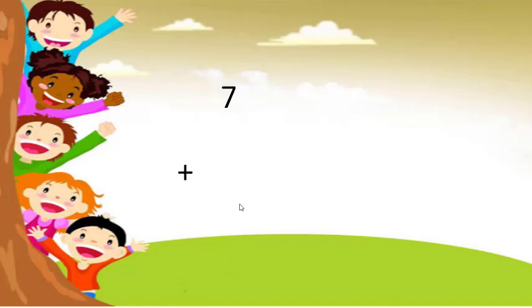Next example: 7 plus 3. Now we will draw seven small lines in front of seven: 1, 2, 3, 4, 5, 6, and 7. Similarly we will draw three small lines in front of three: 1, 2, 3.